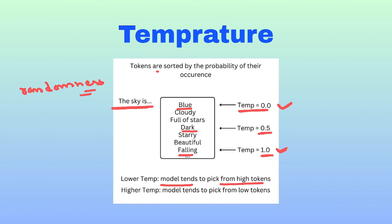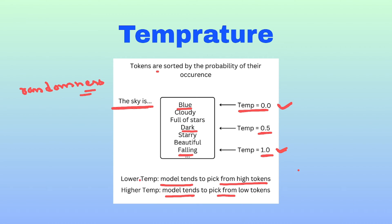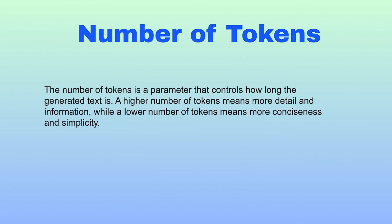To summarize: low temperature means the model tends to pick from high-probability tokens, while high temperature means the model tends to pick from low-probability tokens. In other words, a high temperature makes the model more likely to generate less probable tokens, leading to more creative and unexpected text. A lower temperature makes the model more likely to generate consistent, expected tokens. It varies from use case to use case where you want low or high temperature.